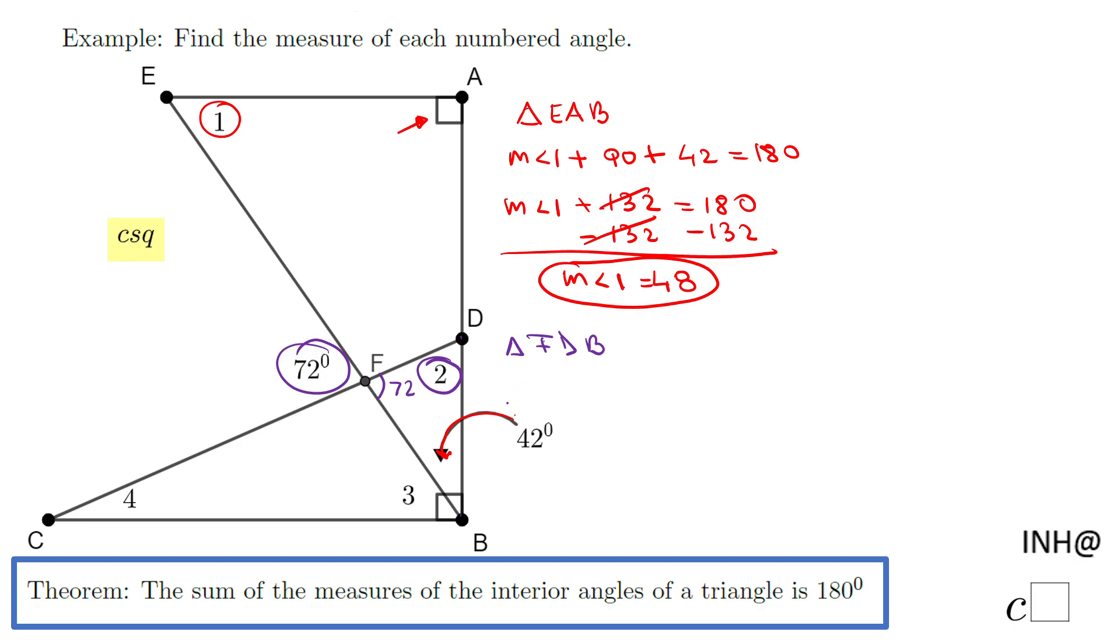I can write a similar statement: the measure of angle 2 plus 72 plus 42 equals 180. I can combine 72 and 42, and that will be 114 equals 180. The last step is subtract 114 on both sides.